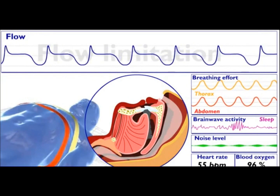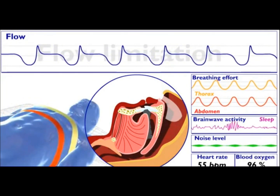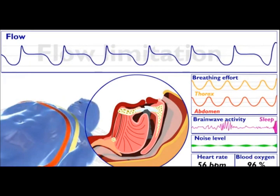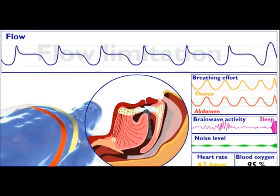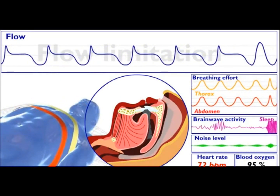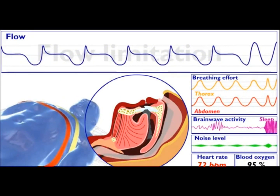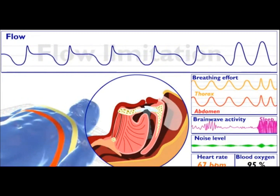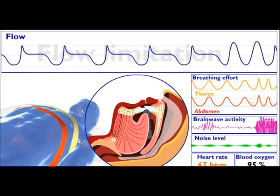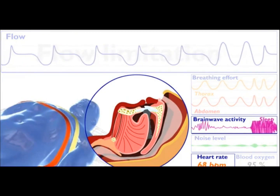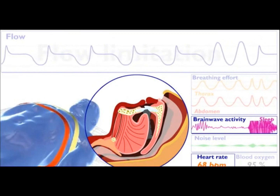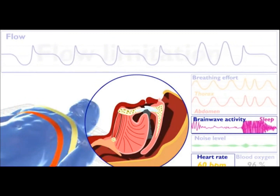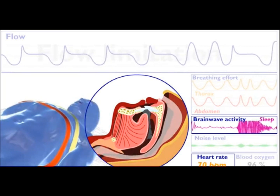At some point, the increased work of breathing against flow limitation may lead to an arousal. An arousal is a disturbance in the sleep cycle. This may be accompanied by some movement. There is a visible increase in brainwave activity and heart rate. Each arousal has a powerful effect on your body.